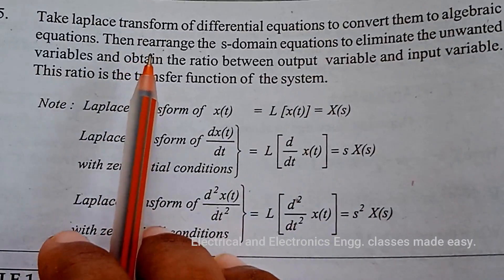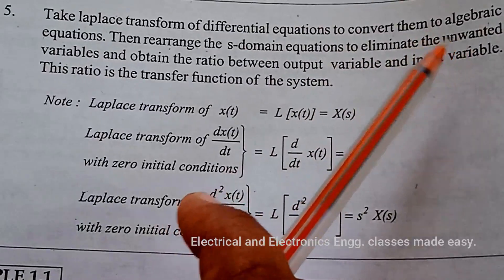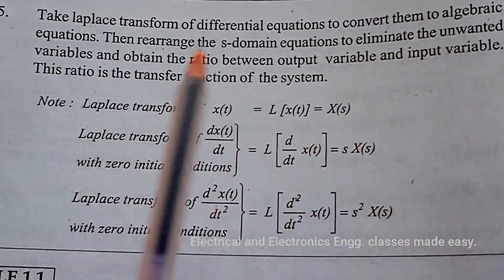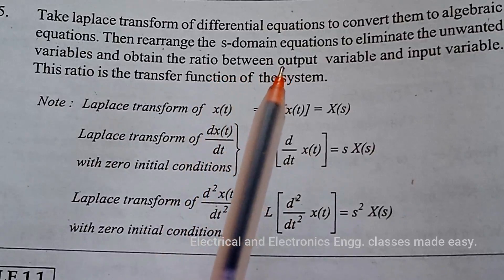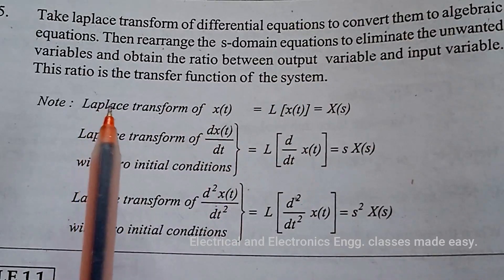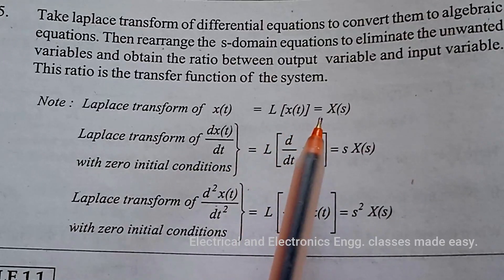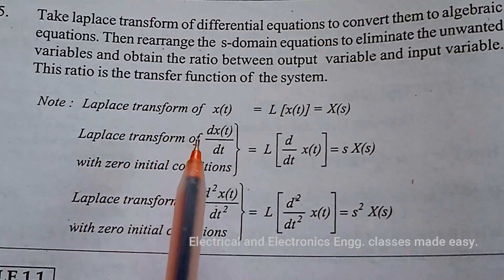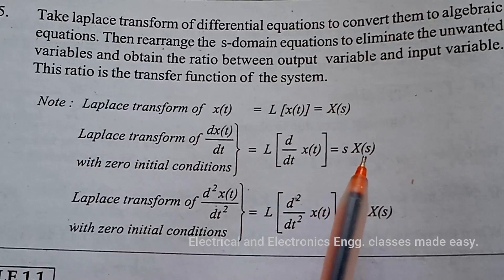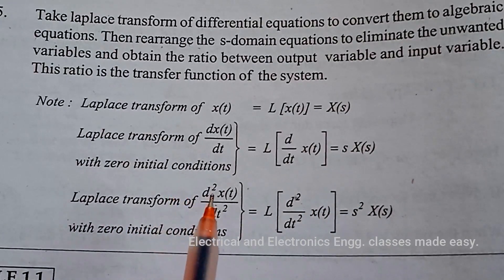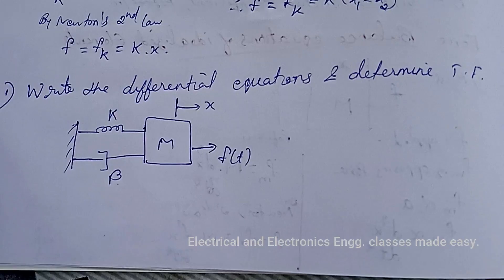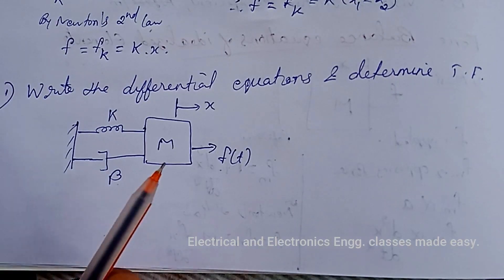Finally, take the Laplace transform of the differential equations to convert them to algebraic equations, then rearrange the s-domain equations to eliminate unwanted variables and obtain the ratio of the output variable to the input variable — this ratio is the transfer function of the system. The Laplace transform of x(t) is X(s), and the Laplace transform of d²x(t)/dt² is s²·X(s).